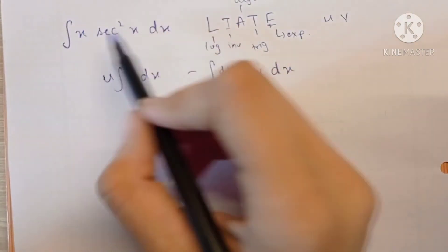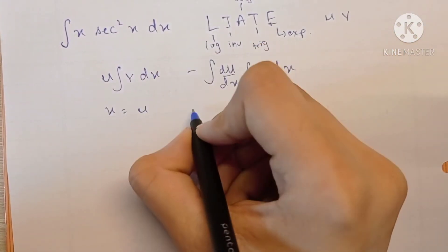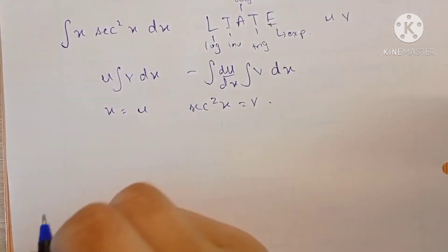Here we can see the algebraic in LIATE comes before trigonometric. So x will be u and sec squared x will be v. So let's integrate it then.